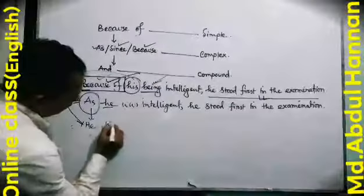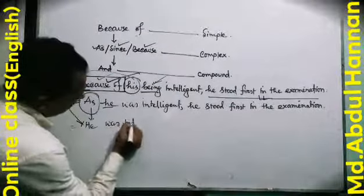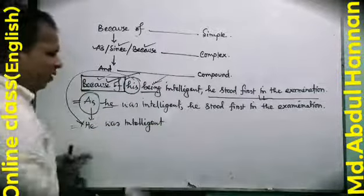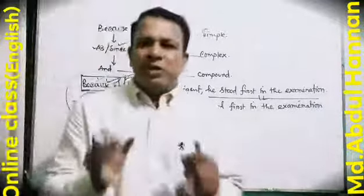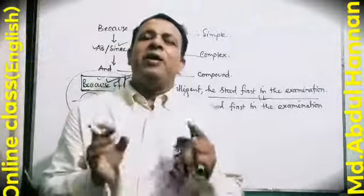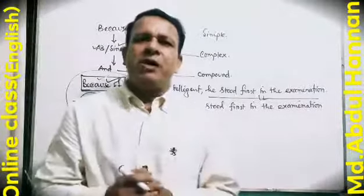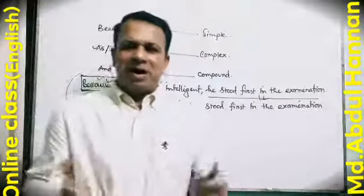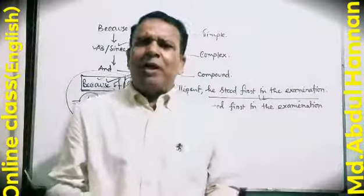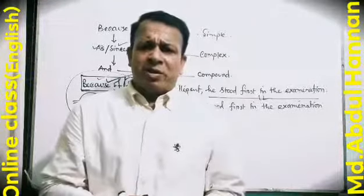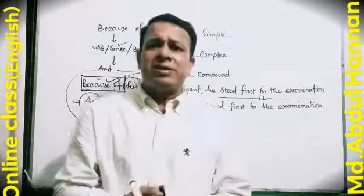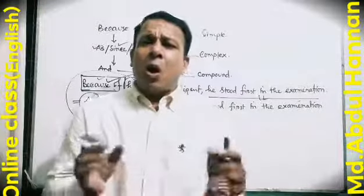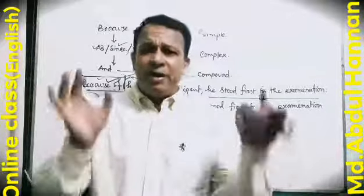He was intelligent — this is the present form. For the compound sentence, we use a coordinating conjunction. And, but — these are coordinating conjunctions. A compound sentence consists of two independent clauses joined by a coordinating conjunction. He stood first in the examination.